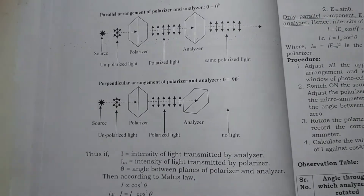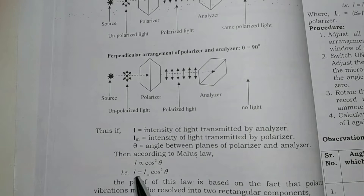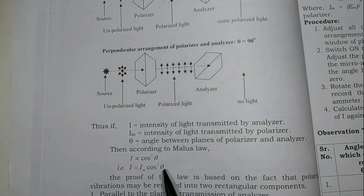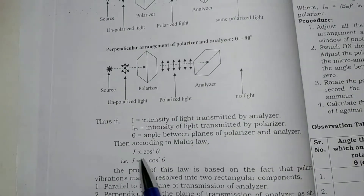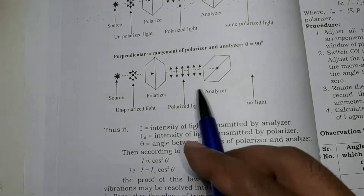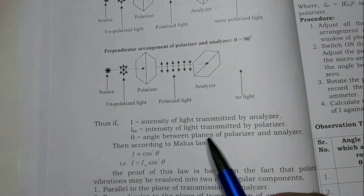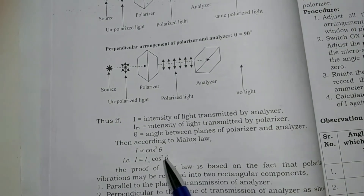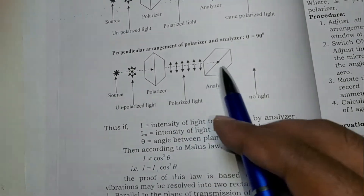So what is Malus Law? According to Malus Law, the equation is I equals I-m cos squared theta. Here I is the intensity of the light coming out of the analyzer, I-m is the maximum intensity at the analyzer, and theta is the angle between the polarizer and analyzer. We can state Malus Law as: the intensity of the light coming out of the analyzer is directly proportional to the square of the cosine of the angle between the polarizer and analyzer.